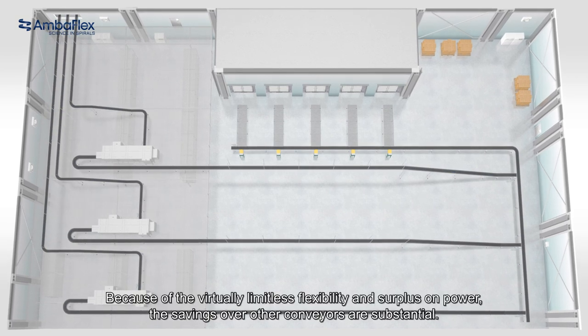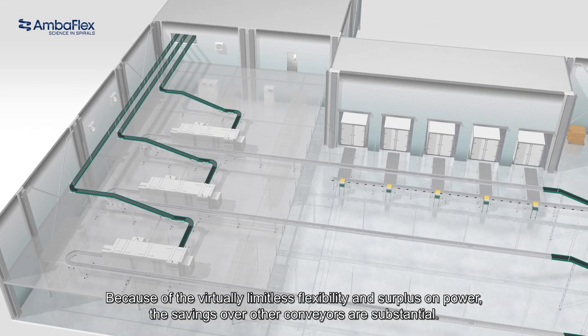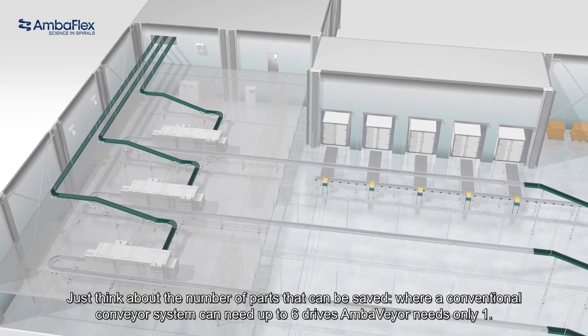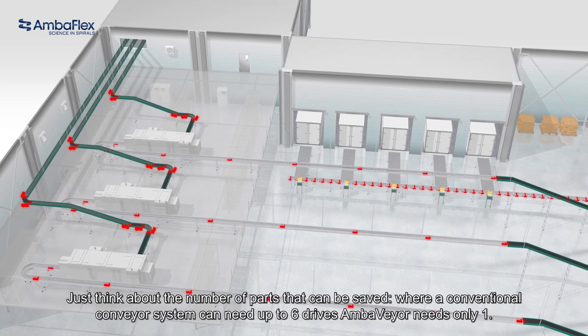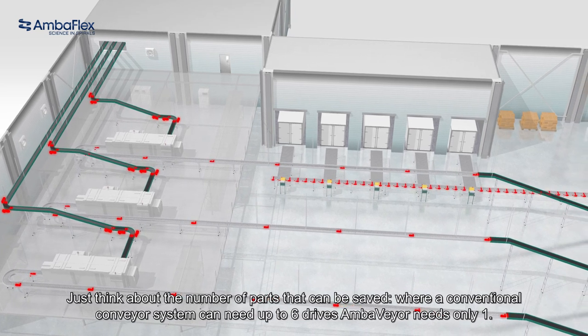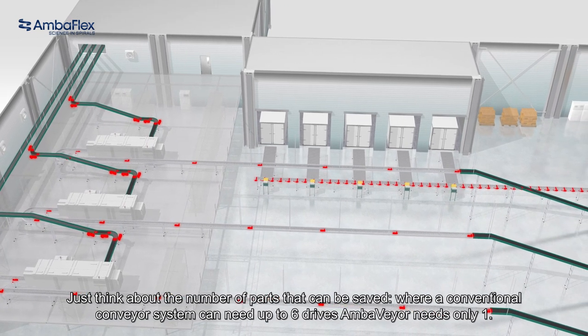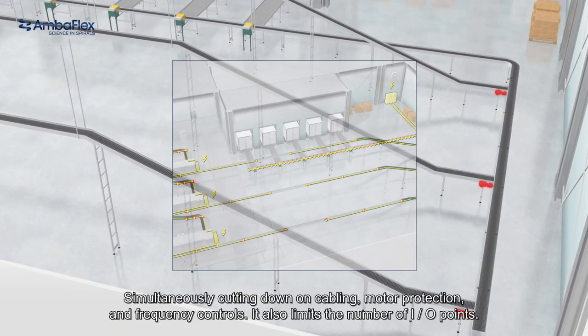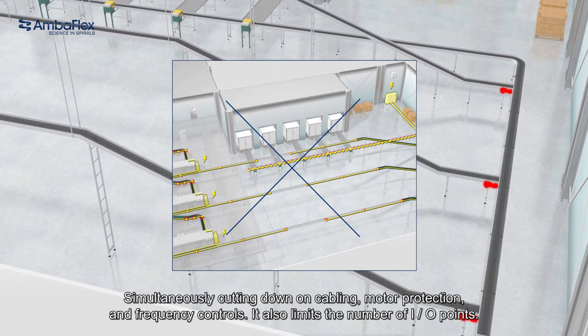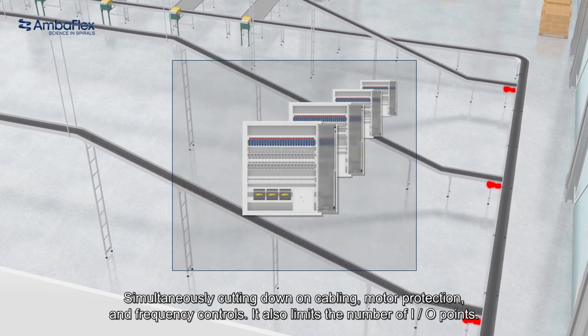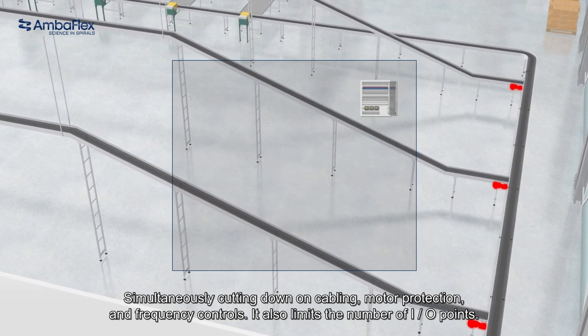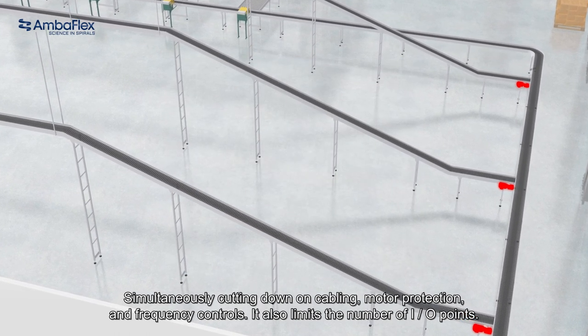Because of the virtually limitless flexibility and surplus on power, the savings over other conveyors are substantial. Just think about the number of parts that can be saved. Where a conventional conveyor system can need up to six drives, Amberveyor needs only one, simultaneously cutting down on cabling, motor protection and frequency controls. It also limits the number of I.O. points.